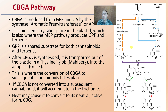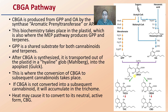After the CBGA is synthesized, it is transported out of the plastid to the hyaline glob into the apoplast. This is all occurring within that trichome structure. This is where the conversion of CBGA to subsequent cannabinoids takes place, and those subsequent cannabinoids can be THCA or CBDA. Any CBGA that is not converted into subsequent cannabinoids will accumulate in the trichome.